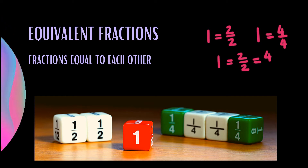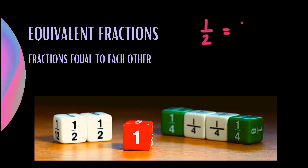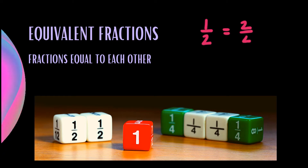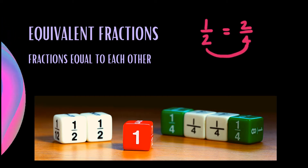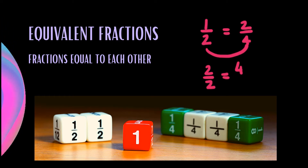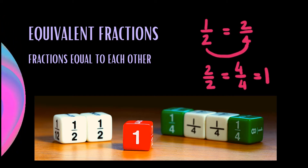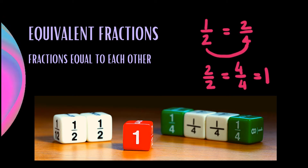One is therefore equal to two over two, but also equal to four over four. In the same manner, a half is equal to two quarters. These are equivalent fractions, as well as two over two which is equal to four over four which is equal to one. To understand how and why equivalent fractions work, we are first going to revisit two concepts.